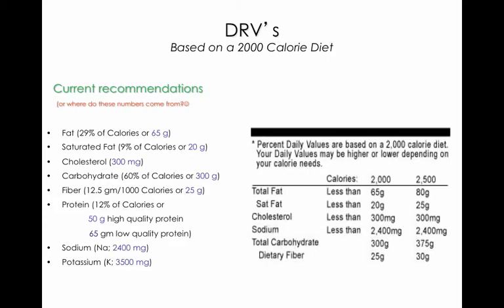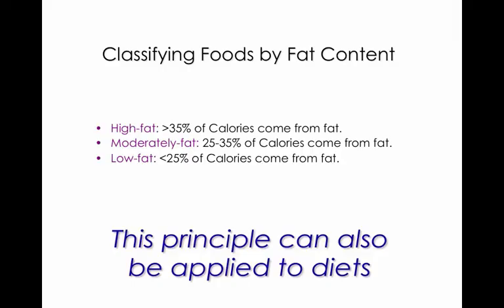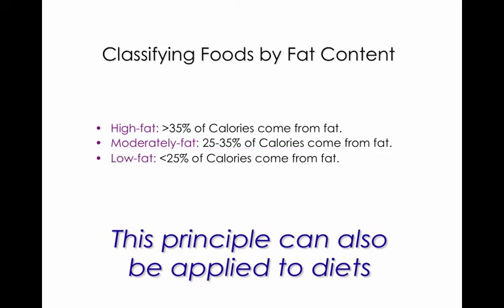This will be your reference table for when you're doing your diet project. Foods can be classified according to fat content: high fat, moderately fat, or low fat. Foods don't usually label themselves as high fat, so we'll talk about what they need in order to be labeled low fat — generally that's less than 25% of their calories from fat. This can also be applied to diets: high fat diets, high carb diets, low fat diets, low carb diets.